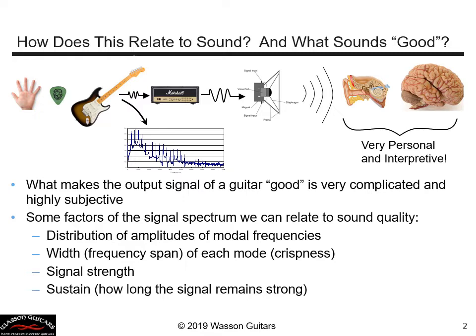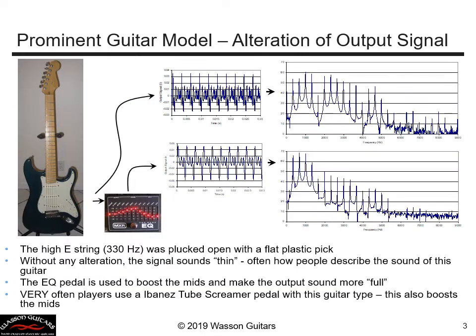There are factors that relate to sound quality: the distribution of the amplitudes of the modal frequencies, the width and frequency span of each mode, the crispness of each mode — each spike on our plot. Signal strength matters — you need good signal strength. And then we know that sustain is important; how long the signal remains strong is important in electric guitars.